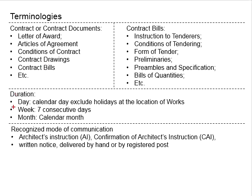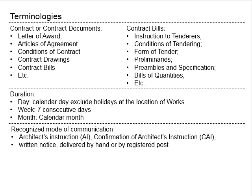Next, we talk about the week. A week refers to 7 consecutive days, regardless of public holidays. In our general perception, 7 days is equivalent to a week. However, in the context of the contract, based on the definitions in the conditions of contract, this is not necessarily true — because 7 days excludes holidays. In the case that there are holidays within that 7-day period, a week by definition is shorter than 7 days, since a week means 7 consecutive days.